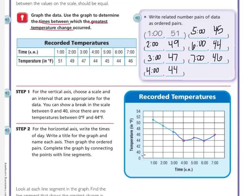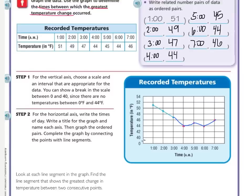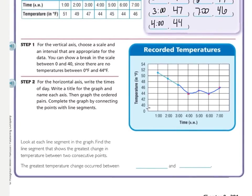Now that our line graph is created, we need to actually answer our questions. We look at each line segment in the graph — from point to point — and find the segment that shows the greatest change in temperature between two consecutive points. Looking at the segments, one looks like it goes a little bit longer. I would say that between three and four o'clock there's the biggest dip in the line. So the greatest temperature change occurred between three o'clock and four o'clock.